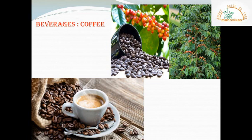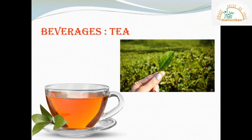Beverages include tea and coffee. If you look at the picture, there's a coffee plant. This plant bears coffee berries, from which we get coffee beans. Coffee is prepared from these roasted coffee beans. The tea plant is a shrub — a small plant with thin, hard stems and branches that grow close to the ground. Usually the leaves are used to make tea.